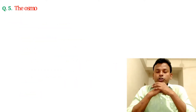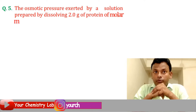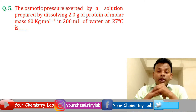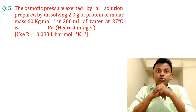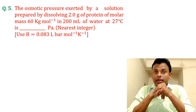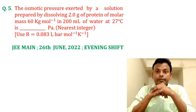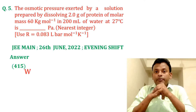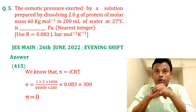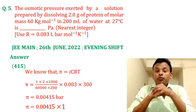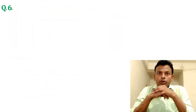Question 5: The osmotic pressure exerted by a solution prepared by dissolving 2.0 gram of a solute of molar mass 60 gram per mole in 200 ml of water at 27 degrees Celsius is dash Pascal (nearest integer). R = 0.083 liter·bar per mole per Kelvin. This question was set in JEE Main 26th June 2022 evening shift. Answer is 450. Using π = CRT, putting in all values, π = 0.00415 bar = 415 Pascal. Answer is 450.